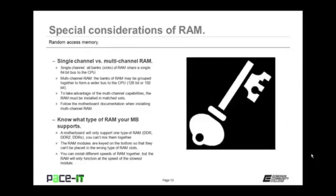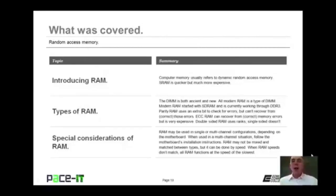You also need to know what type of RAM your motherboard supports. A motherboard will only support one type of RAM — you can't mix different types together. The RAM modules are keyed on the bottom so they can't be placed into the wrong type of slot. And finally, you can install different speeds of RAM together, but the RAM will only function at the speed of the slowest module.